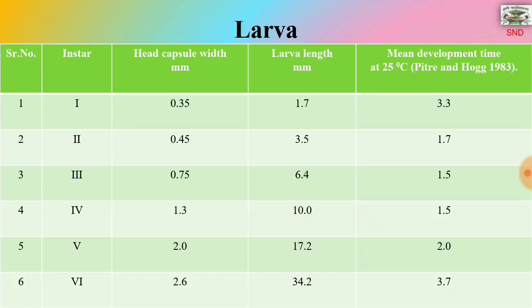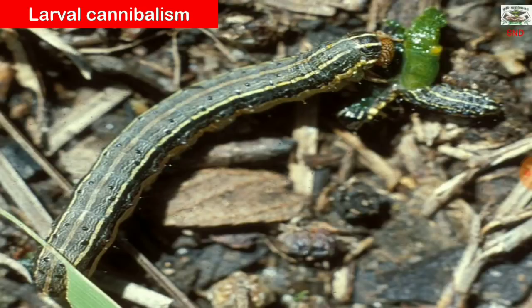The larvae also show a phenomenon of larval cannibalism. Cannibalism means eating away or killing its own species for food. You can see on the left-hand side that the larva is feeding on its own species.